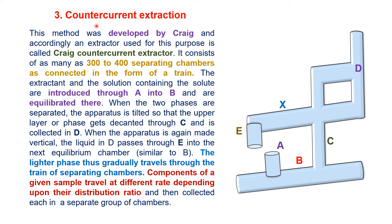The third type is counter current extraction. This method was developed by Craig, and accordingly the extractor used is called the Craig counter current extractor, as shown in the figure. It consists of as many as 300 to 400 separating chambers connected in the form of a drain. The extractor and the solution containing the solute are introduced from A into B.